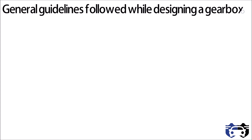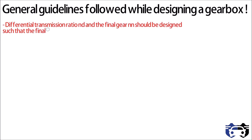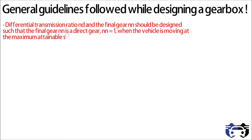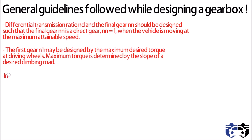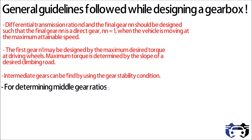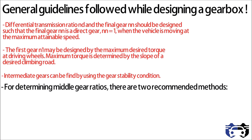Here are some general guidelines followed while designing a gearbox. The first guideline is that the differential transmission ratio nd and the final gear nn should be designed such that the final gear nn is a direct gear — nn equals 1 — when the vehicle is moving at maximum attainable speed. The first gear n1 may be designed by the maximum desired torque at the driving wheels, which is determined by the slope of the desired climbing road. The intermediate gears can be found using the gear stability condition. For determining middle gear ratios, there are two recommended methods: the geometric ratio method and the progressive ratio method.